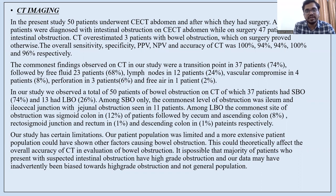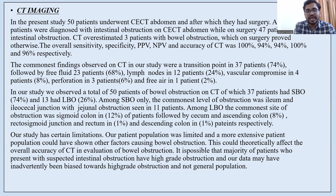Free air was observed in 1 patient. Of the 50 patients with bowel obstruction on CT, 37 patients (74%) had small bowel obstruction and 13 patients (26%) had large bowel obstruction. Among small bowel obstruction, the commonest level was ileum and ileocecal junction, with jejunal obstruction seen in 11 patients. Among large bowel obstruction, the commonest site was sigmoid colon in 12% of patients, followed by cecum and ascending colon in 8%, rectosigmoid junction and rectum in 1%, and descending colon in 1% of patients.